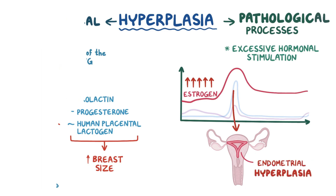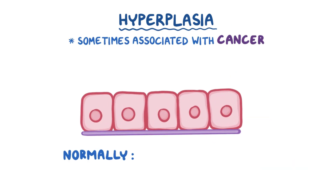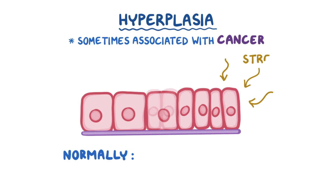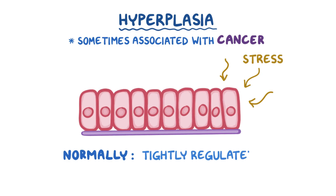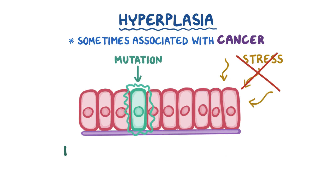One problem with hyperplasia is that it's sometimes associated with cancer. Normally, hyperplasia is an adaptive response to stress, so it's a tightly regulated process, meaning the tissue doesn't grow out of control. In hyperplasia, the process stops if the stress factors are eliminated. That's different from cancer, where there's uncontrolled cell division. The thing is that as cells divide in hyperplasia, some can mutate, and that's how hyperplasia can slip into dysplasia and eventually into malignancy.